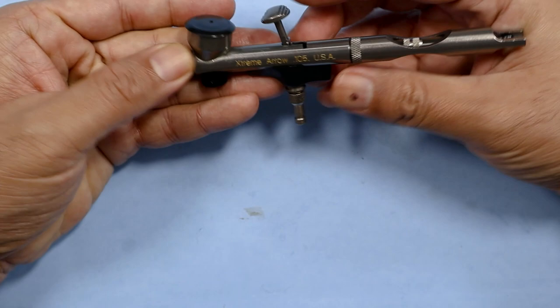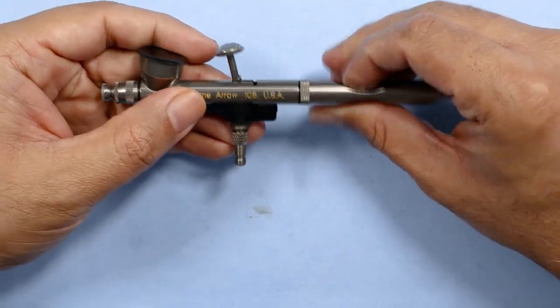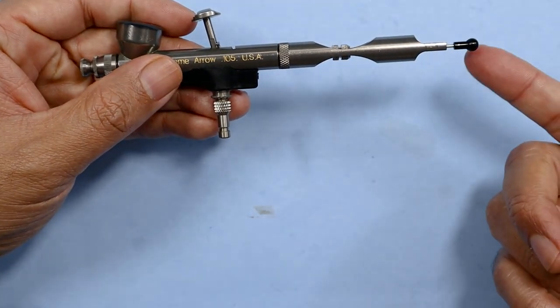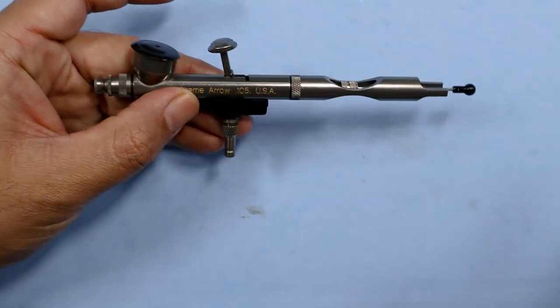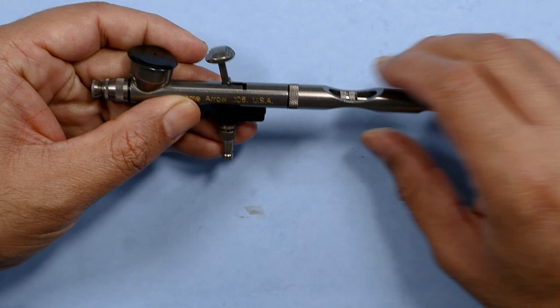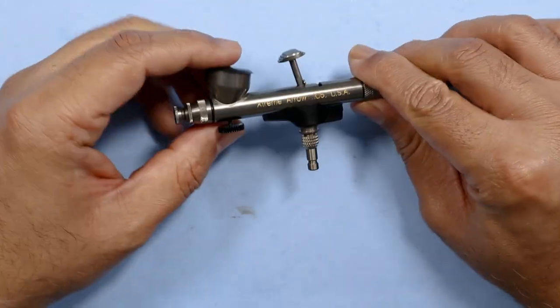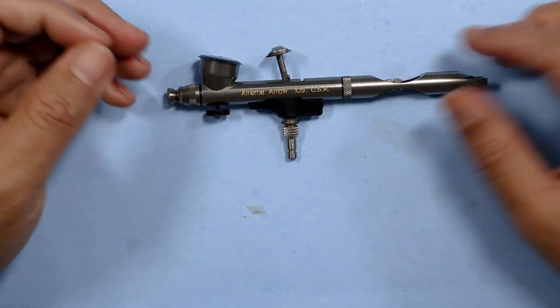But another key important factor of cost is replacement parts. Now, if you need to replace a part, some airbrushes out there, the cost can be $60 just for a needle. With the Badger, you can get replacement parts for around $20, which is very affordable because replacement parts are going to add up at some point.